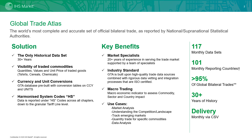Global Trade Atlas is the world's most comprehensive database of official bilateral trade data, covering imports and exports by quantity, value, and unit price for over 96% of world trade, providing insight into all reported commodities under the Harmonized system across all transportation modes for 101 countries. With over 30 years worth of data available and covering about 5,000 commodities,